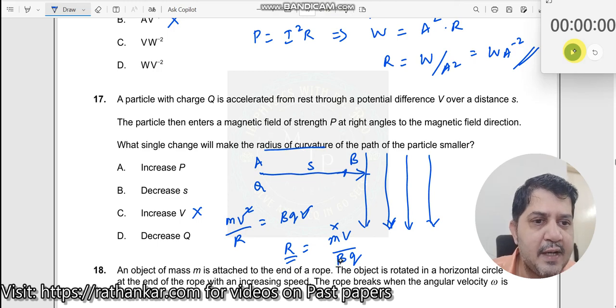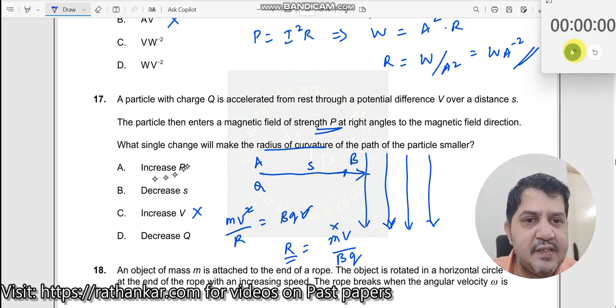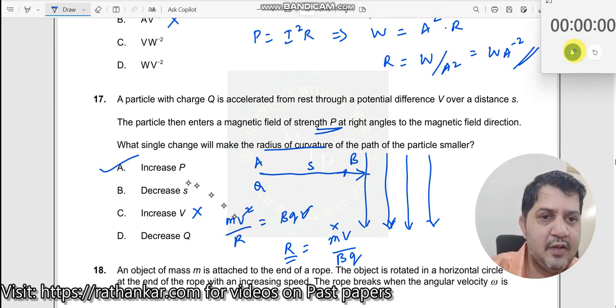Then, magnetic field. Magnetic field, what should I do? I should increase the magnetic field. Here, magnetic field is given by the letter P instead of B. So therefore, increase the value of P. Increase the value of P. Answer is A.